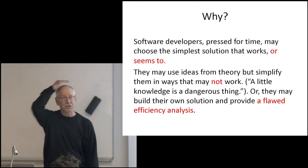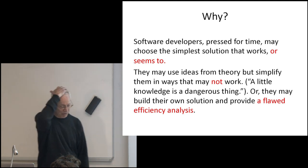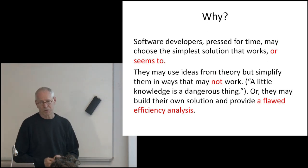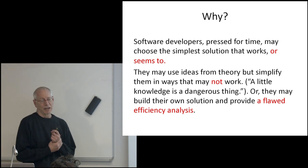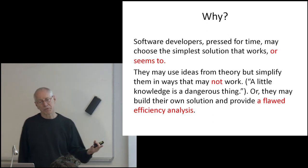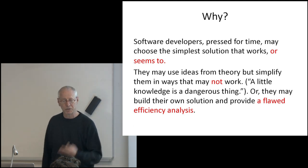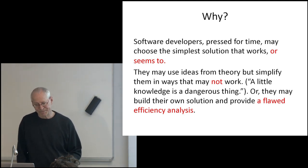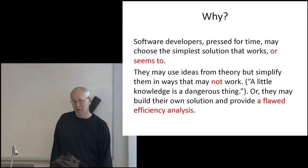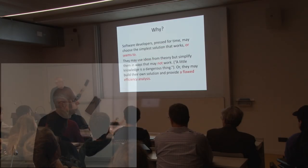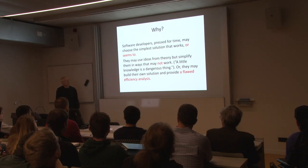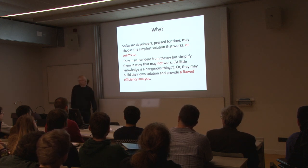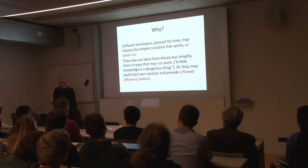Software developers always have to work to deadlines, and the right thing for them to do is to choose the simplest method that's going to solve their problem. But sometimes they oversimplify, or they take some theoretical idea and simplify it in a way where it doesn't work — they don't necessarily understand it. And sometimes they will roll their own solution, which may work well in practice, but provide a flawed efficiency analysis that confuses theoreticians.